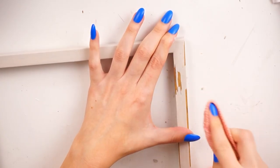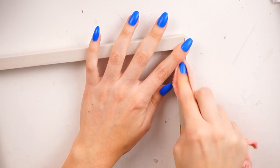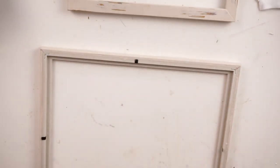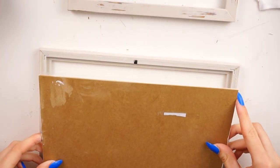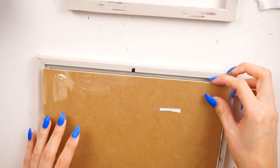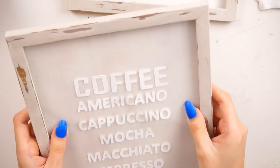I then went ahead and painted all the frames in Hessian by Rustoleum in the furniture chalk paint, and I did all three frames in that and then I wet distressed them with a wet microfiber cloth just to give a nice rustic feel.